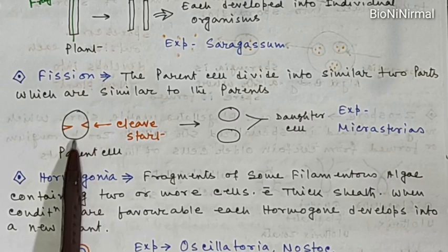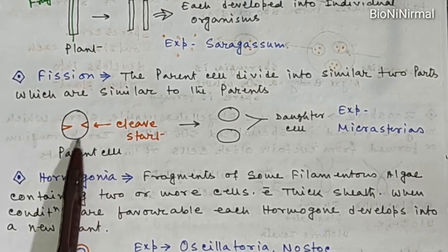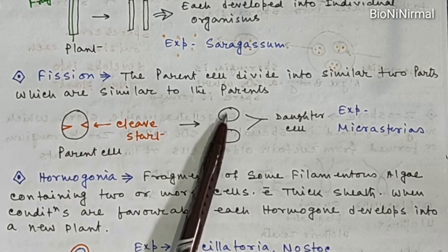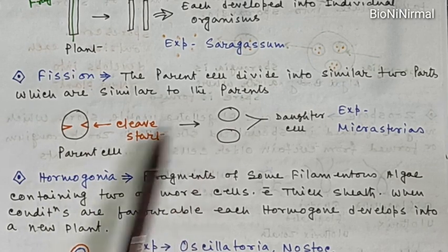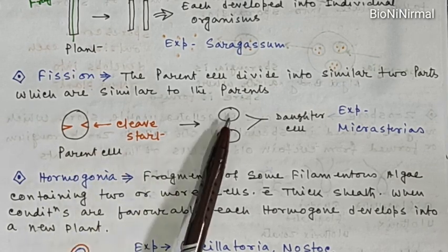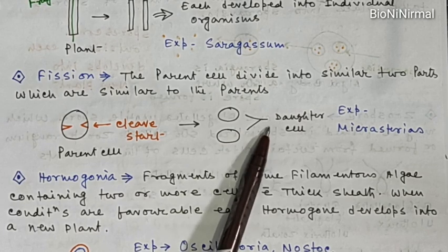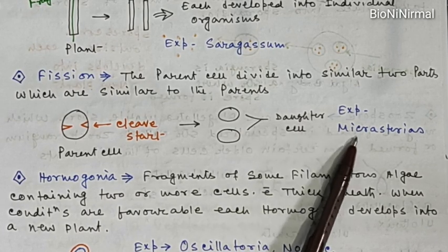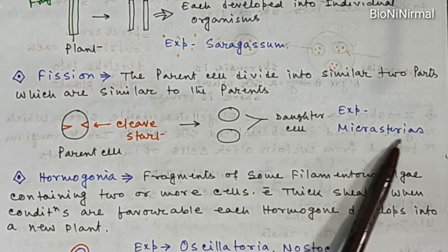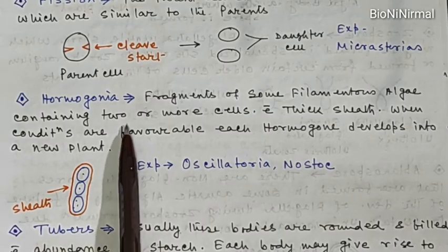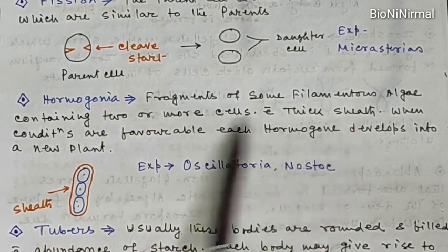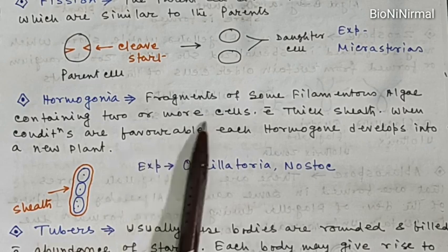Next is fission. The parent cell divides into two similar parts. You can see that this is a parent cell; cleavage starts in this region and it divides into two parts which are similar to the parent. Each of these daughter parts develops into an entire plant. Example: Microsteria.